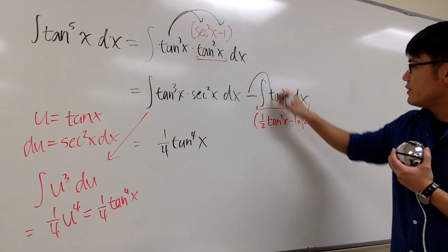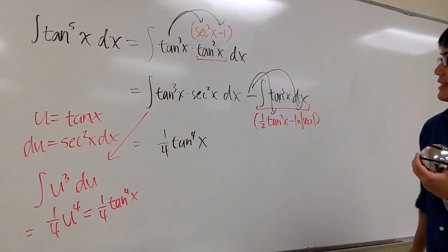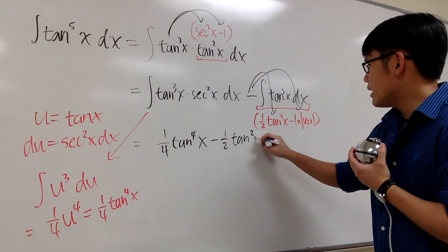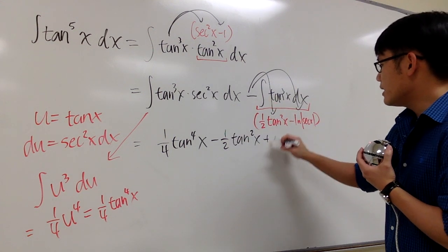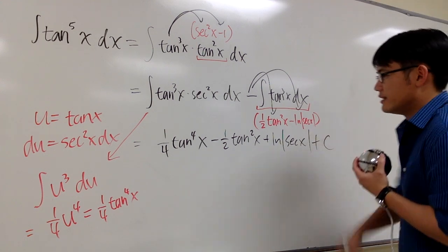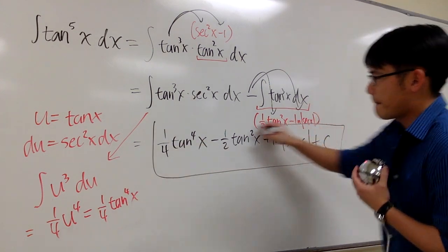And I'm just going to distribute the negative into the parentheses, like that. And we have minus times that, so minus 1 half tangent squared x. And the minus minus becomes plus ln absolute value of secant x. And then this is it. That's the answer.